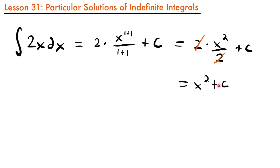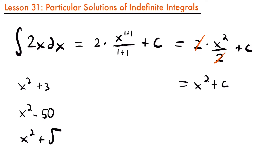The derivative of a constant c is just 0. So this is the general solution because it represents all the different functions that could have this derivative. Not only does x squared itself have the derivative of 2x, but so does x squared plus 3, or x squared minus 50, or x squared plus the square root of 15,329. No matter what constant you add to x squared, when you take the derivative, the constant's derivative is 0, so you're just left with 2x. That's why we have this c here — it represents all possible constants that could be added such that the function still has a derivative of 2x.